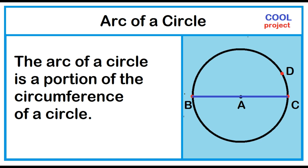Point D is another point on the circle. Point B and point D divide the circle into two parts.